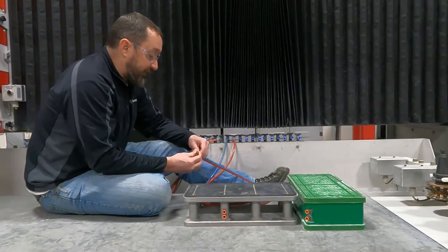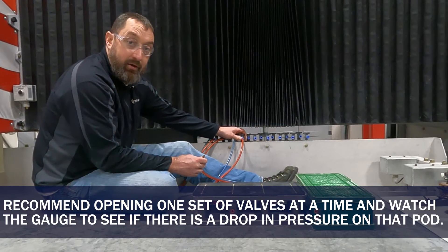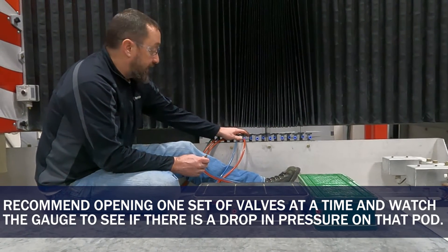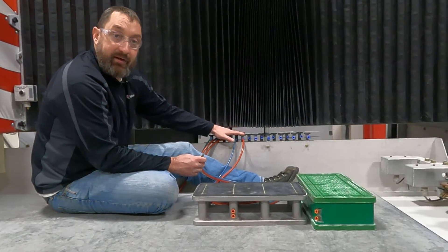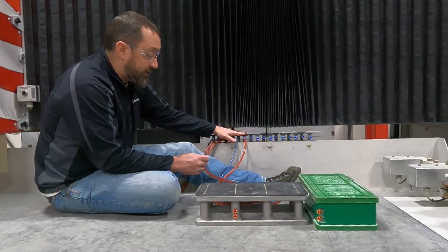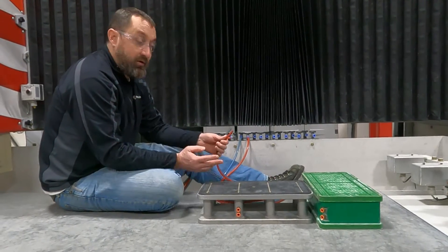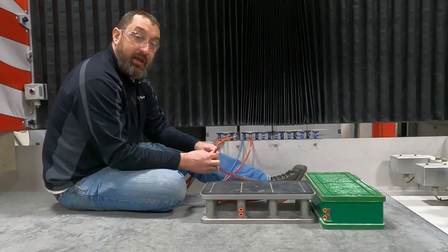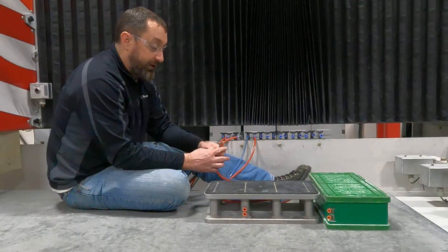So first thing to do to start out with would be to slowly turn on one line at a time and just watch the vacuum really closely to see where you get a drop in vacuum. You do want to start then from there inspecting the lines going to the pods and the pods themselves if you get a good drop in one of them.